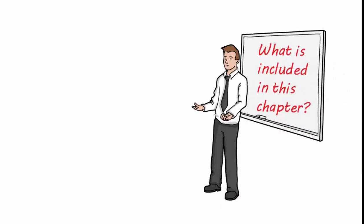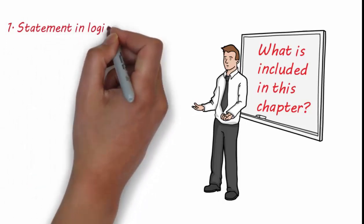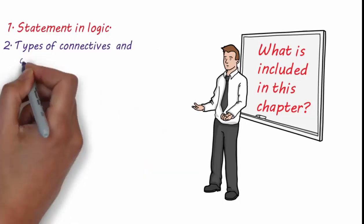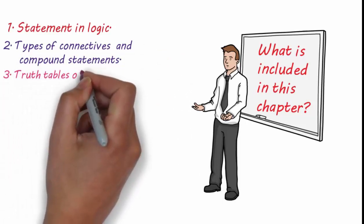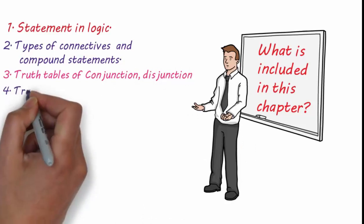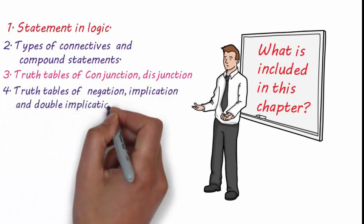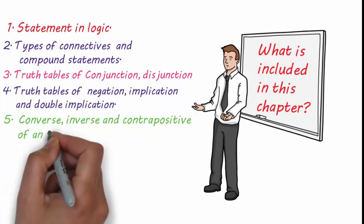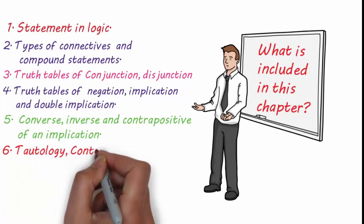Number one: statements in logic. Number two: types of connectives and compound statements. Number three: truth tables of conjunction and disjunction. Number four: truth tables of negation and implication. Number five: algebra of statements. Number six: tautology, contradiction, and contingency.